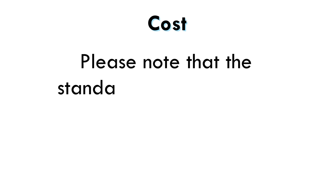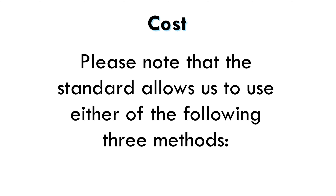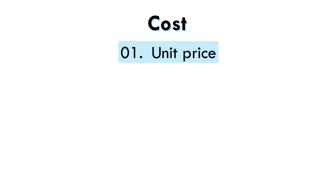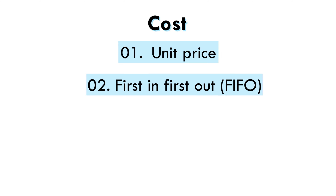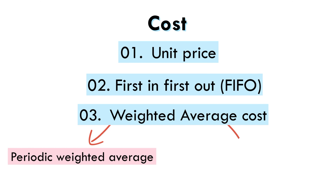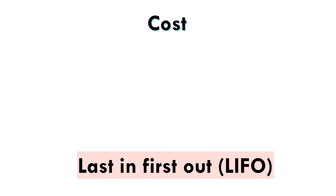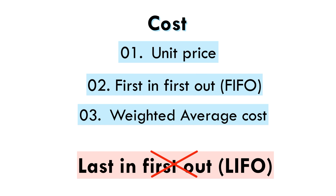Moving on to cost. The standard allows us to use either of the following three methods of determination of cost: number one, unit price; number two, first in, first out — or what we call FIFO; number three, weighted average cost, which can take the form of periodic weighted average or continuous weighted average. Continuous weighted average is also referred to as perpetual weighted average. It is important to note that LIFO — last in, first out — is not permitted by IAS 2.